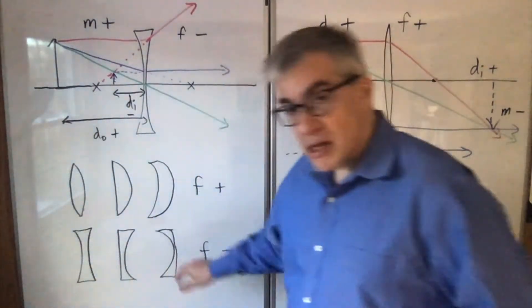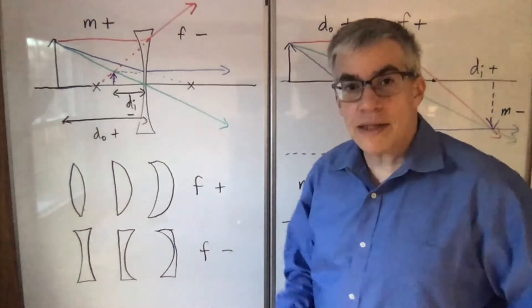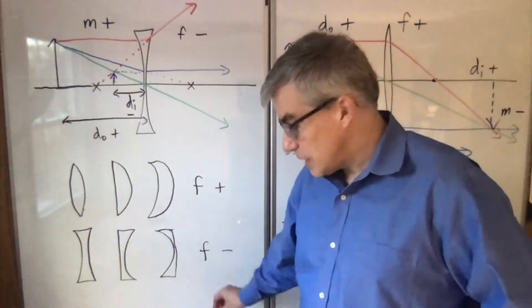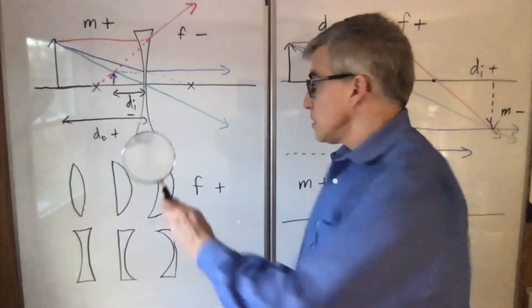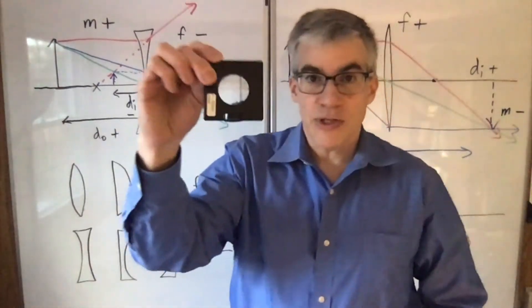If they're thinner in the middle than on the edges, the focal length is negative, and it's a diverging lens. Converging lens, like a magnifying glass. Diverging lens.